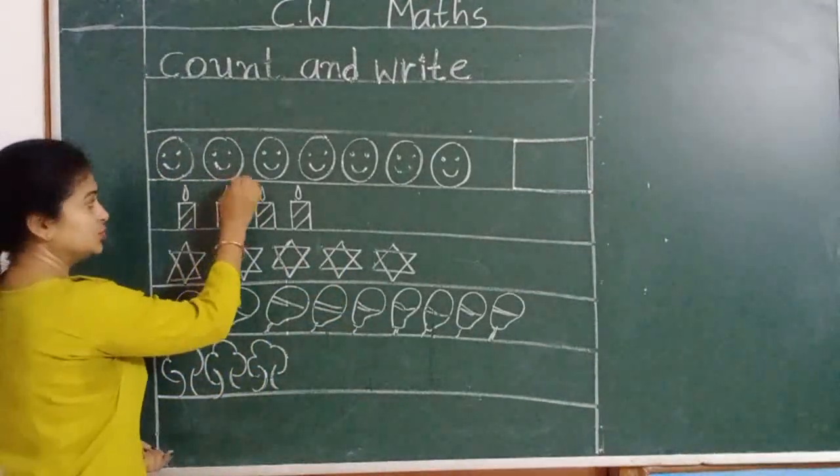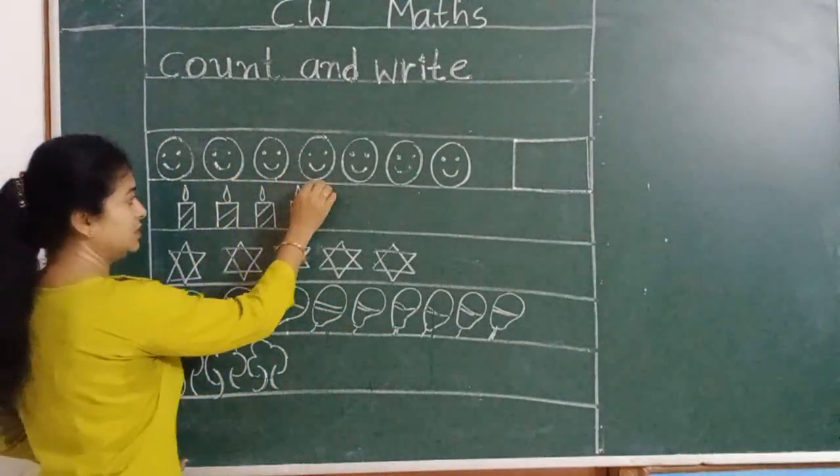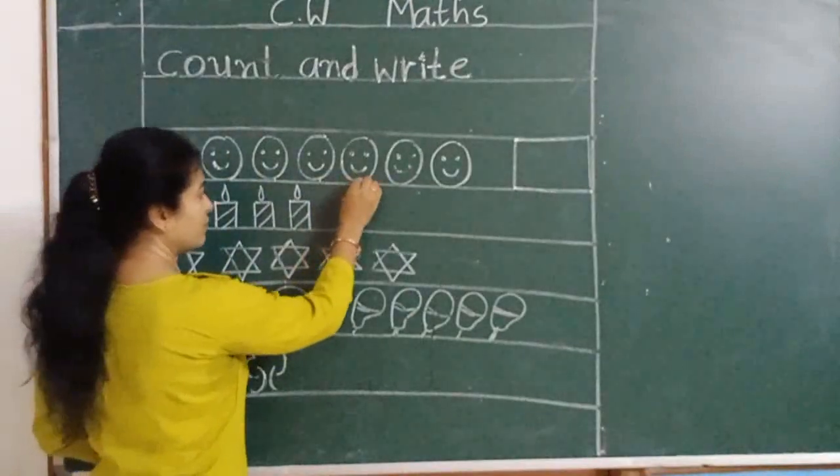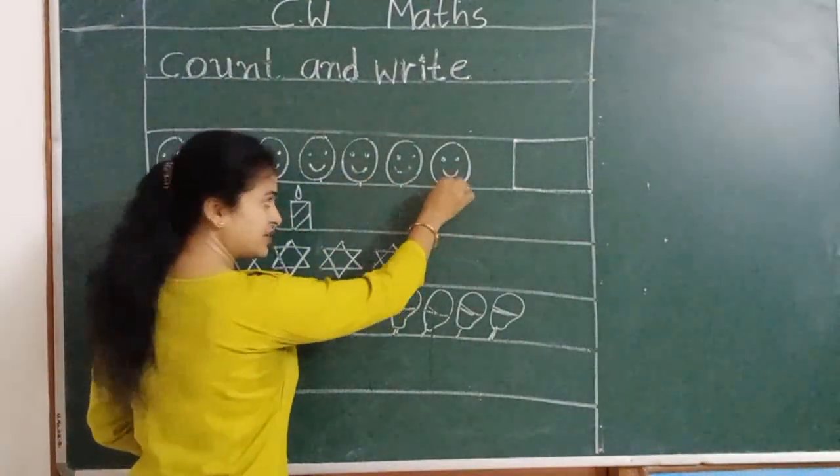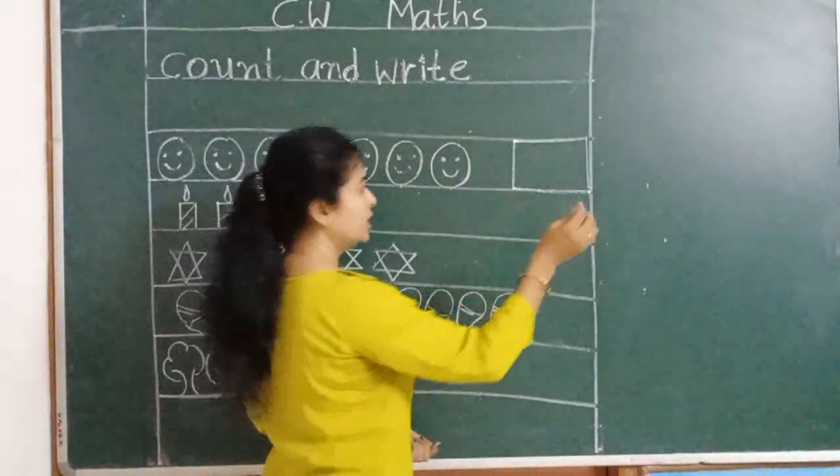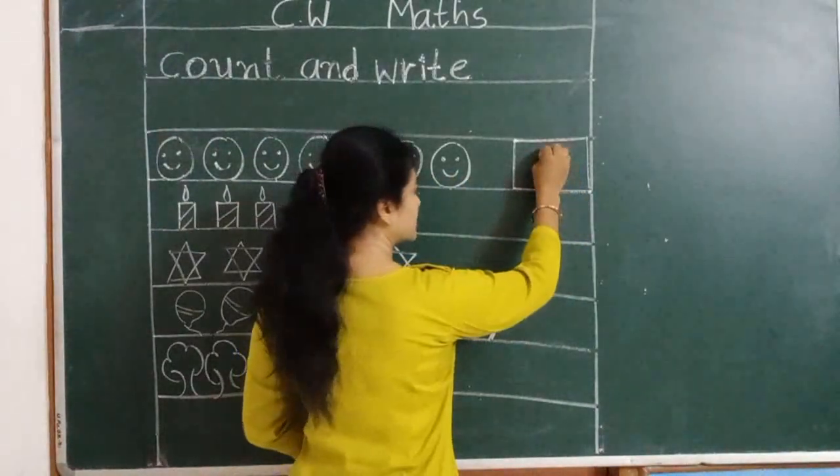1, 2, 3, 4, 5, 6 and 7 smileys here. So write down here number 7.